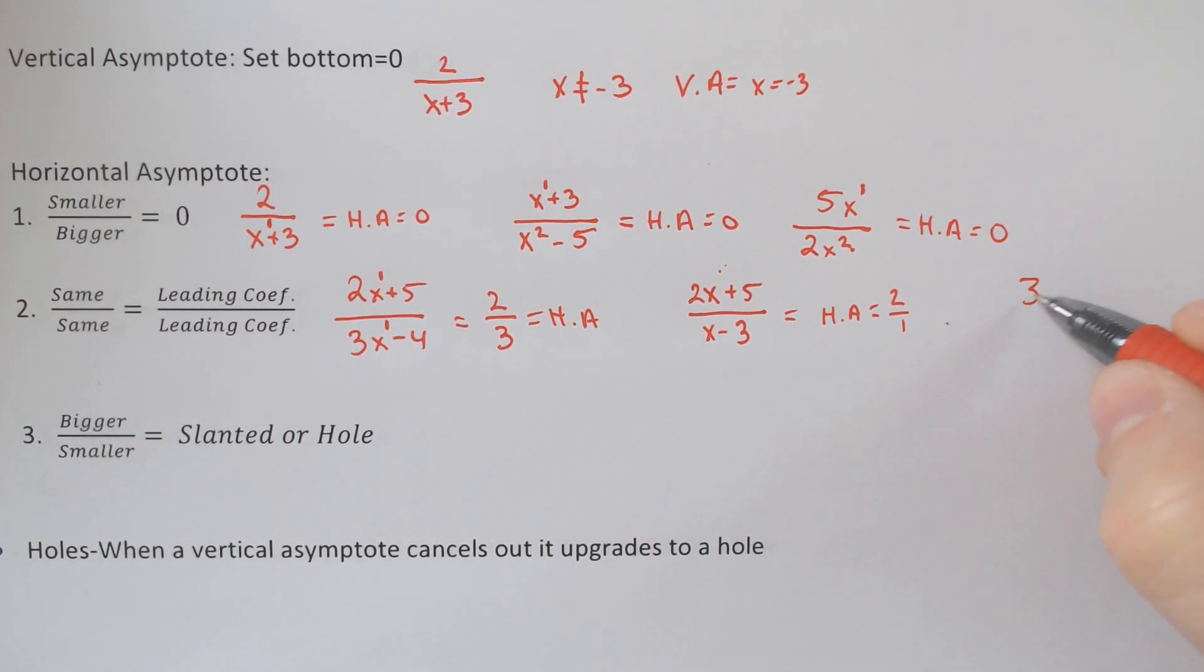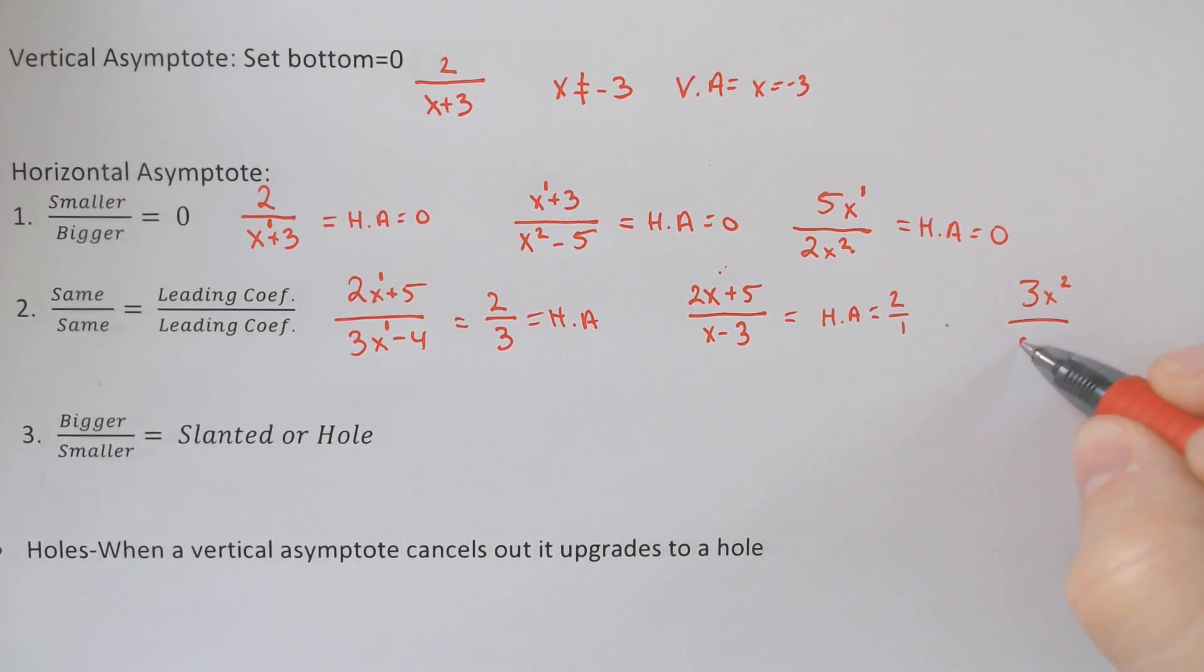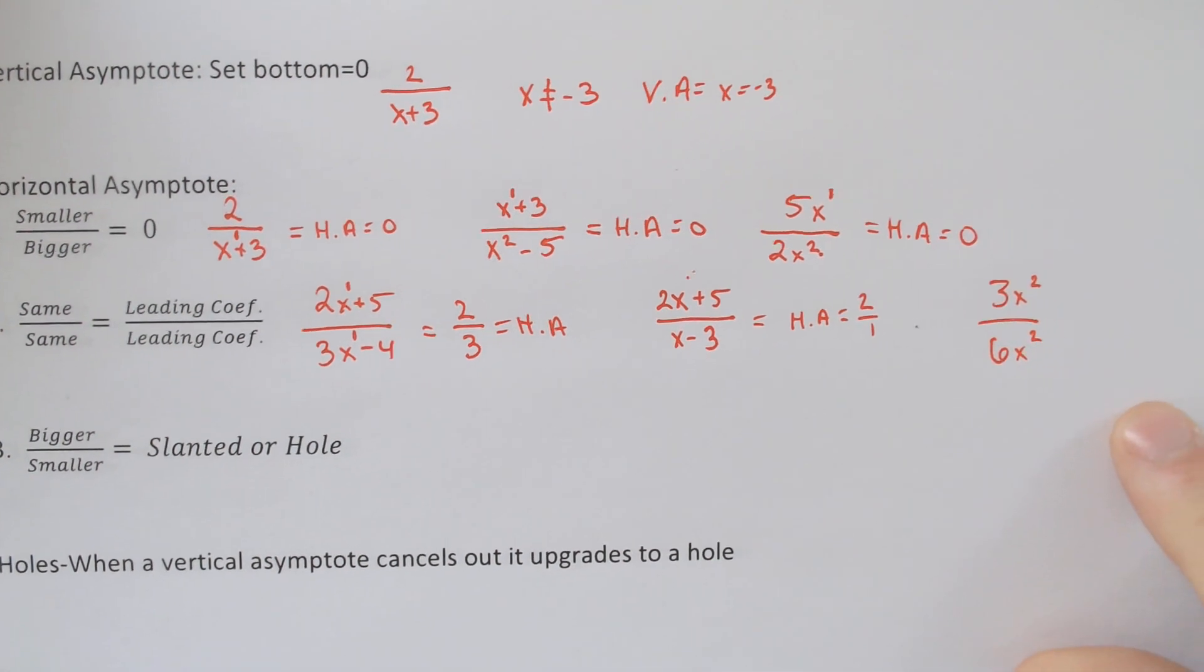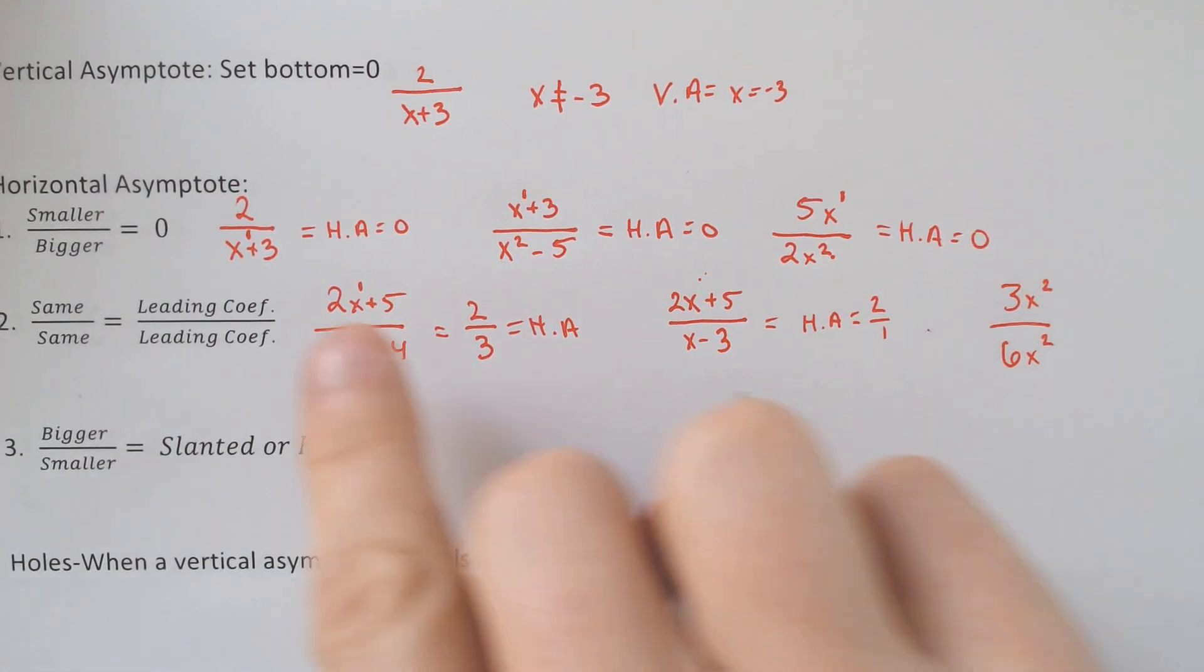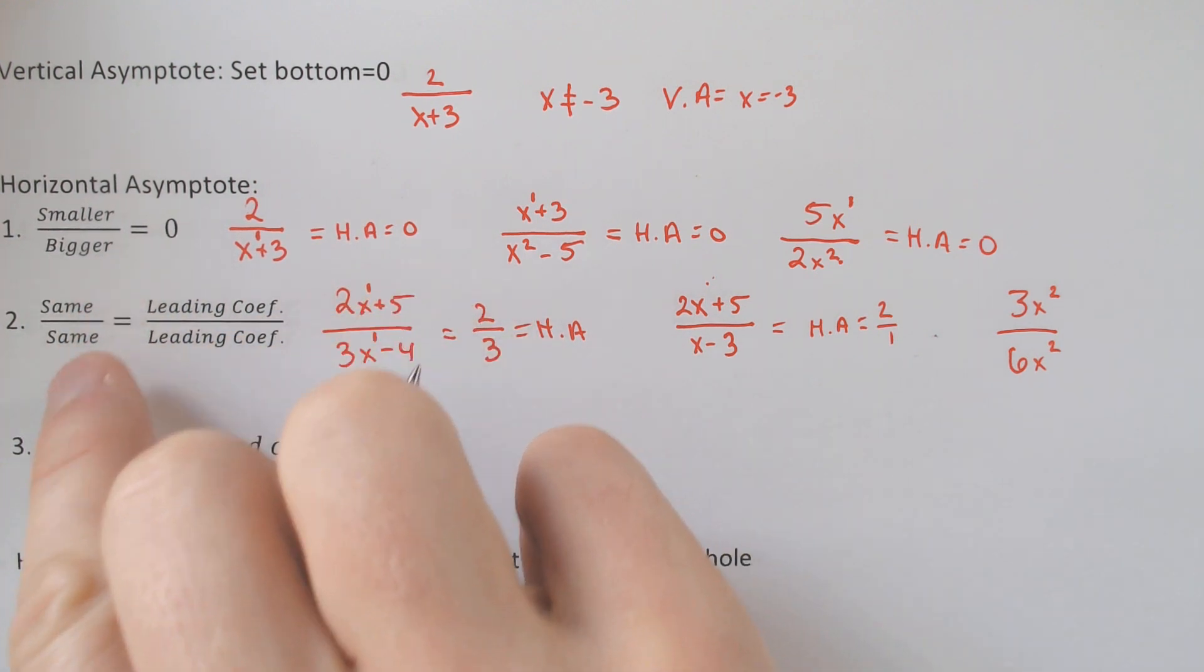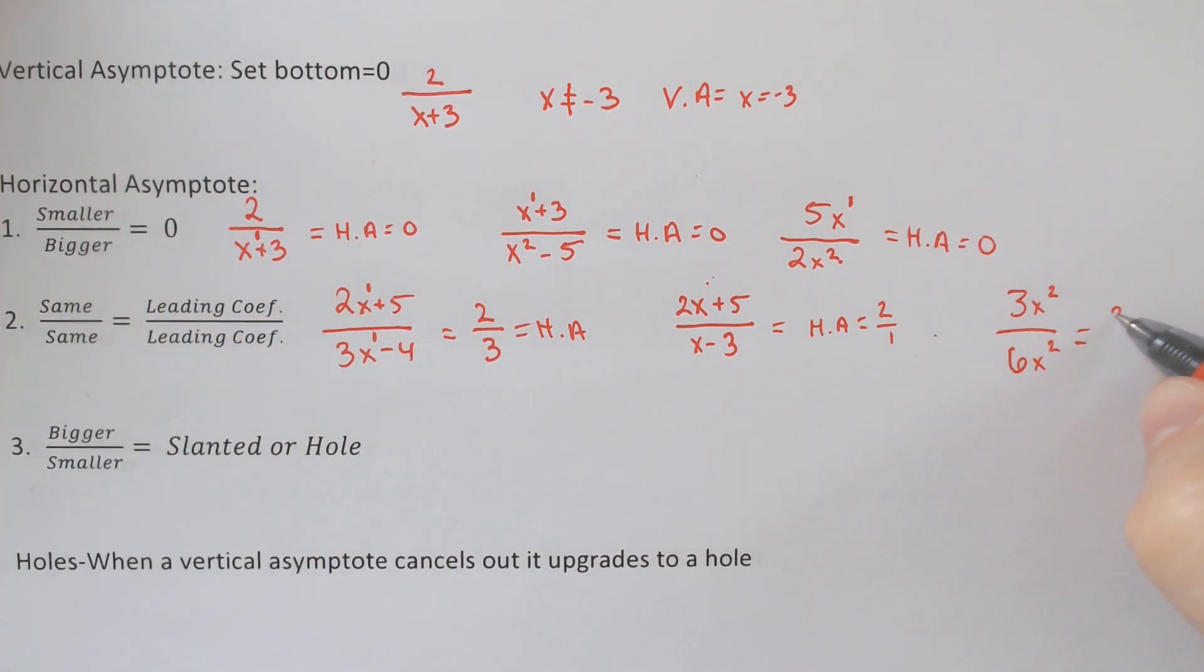It doesn't matter if they're squared or whatever, as long as it's the same exponent and the same exponent, you get your horizontal asymptote from those leading coefficients, okay?